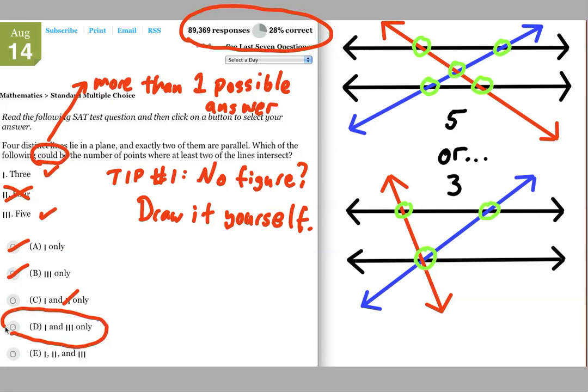One and three only, yes. And it's not going to be one, two, and three because, as we said before, two is not correct. So, the answer is D.